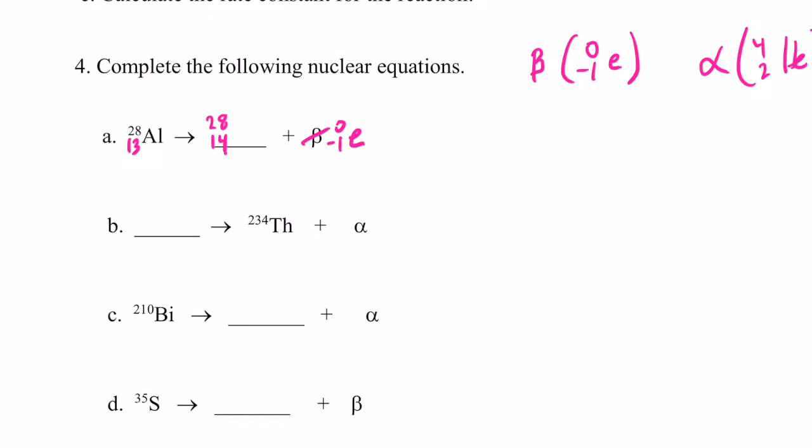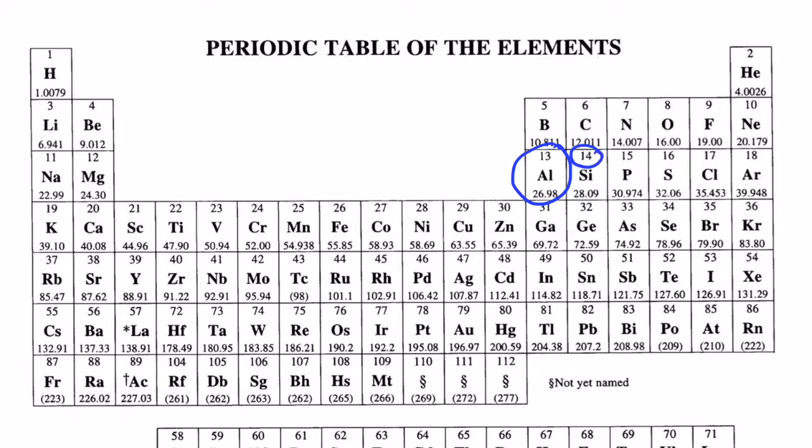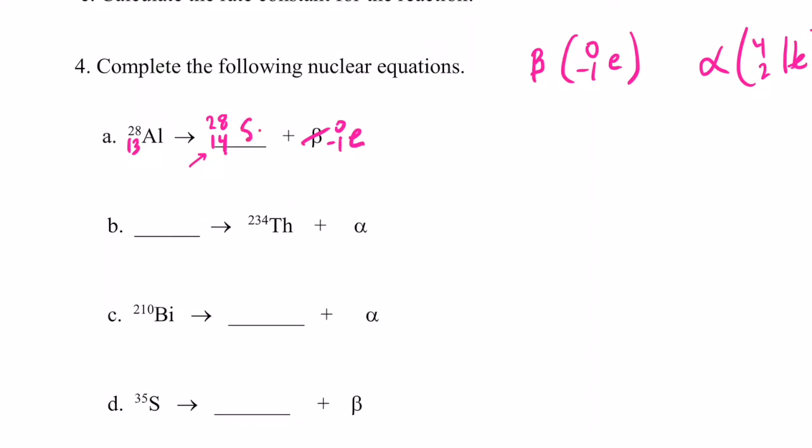Now let's look and see what element number 14 is on the periodic table. And so 14 is the element silicon. So Si. Of course, a quick way to check your work is just to check to make sure that your atomic numbers balance and your mass numbers balance. So 28 equals 28 plus 0, and 13 equals 14 and a negative 1. Yeah, I feel pretty good about that. Ready?